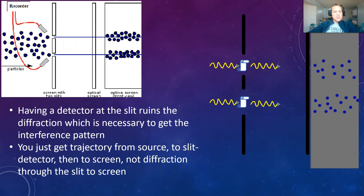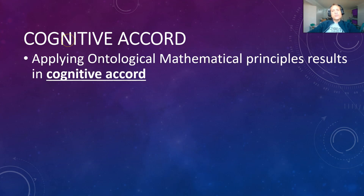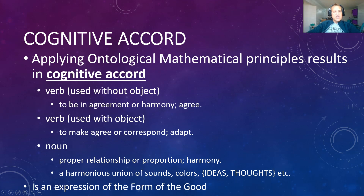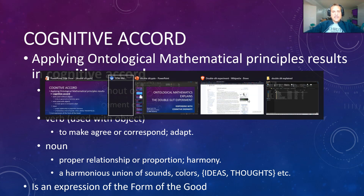So it's easy to explain — we can explain all this now quite easily. Cognitive accord: applying ontological mathematical principles results in cognitive accord, as opposed to cognitive disparity or cognitive dissonance. Accord: to be in agreement or harmony, to correspond, a proper relationship, proportion, harmony, harmonious union of sounds, colors, and especially ideas and thoughts. So it is an expression of the form of the good. Cognitive accord — that is an expression of the form of the good. Let's switch over to a couple of websites and go through what they say about the double slit experiment, and we'll see that now we can easily answer them.